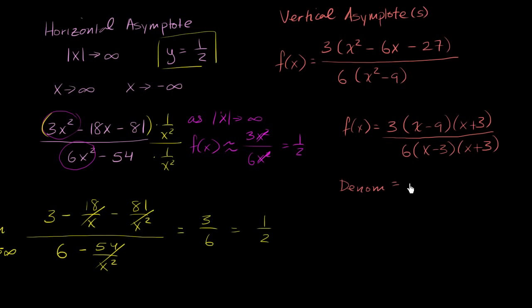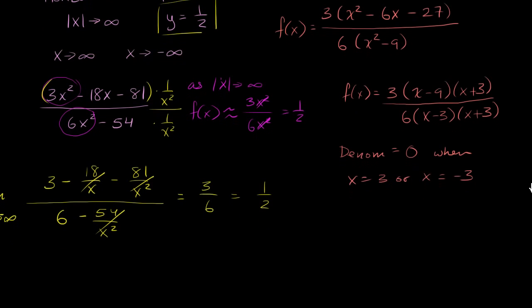Pause and think: are both of those vertical asymptotes? You might realize the numerator also equals 0 when x equals negative 3. So we can simplify by dividing numerator and denominator by (x plus 3) — but we must keep the caveat that the function is not defined at x equals negative 3, since that would involve dividing by 0.